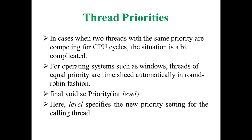When two threads have the same priority, there is a situation where one or two threads in the project might share the same thread priority. In that case, there is a concept called round robin, as per operating system concepts — round robin fashion. The threads skip one by one in round robin fashion. An important question is how to set the priority, since we need to give a thread a priority value such as max priority, min priority, or normal priority.